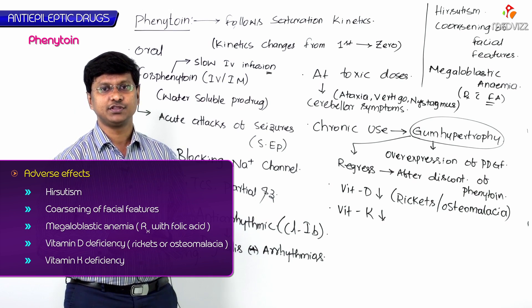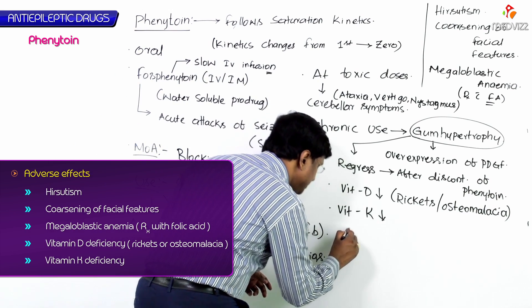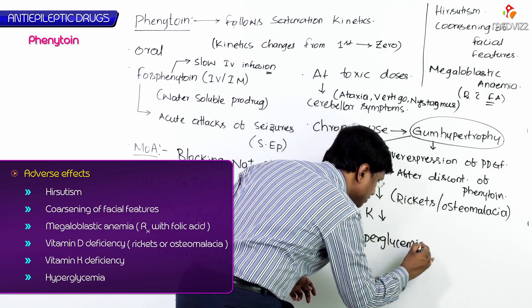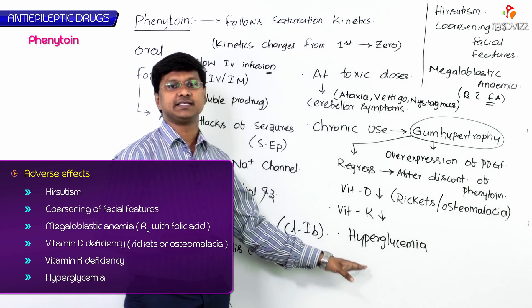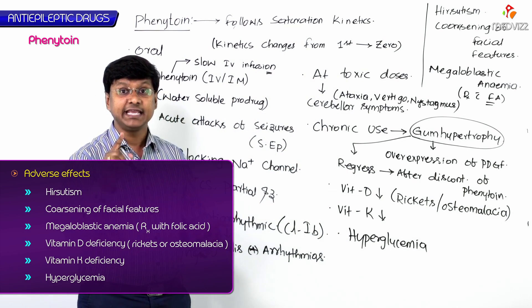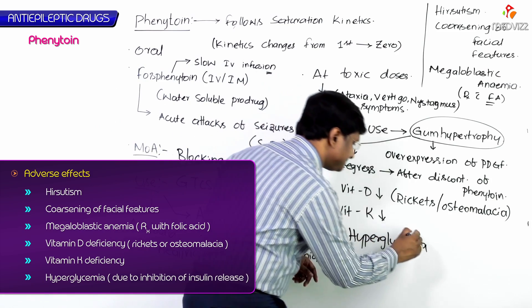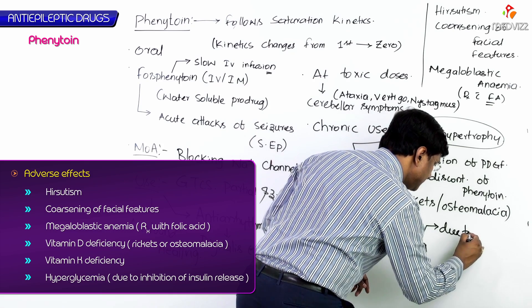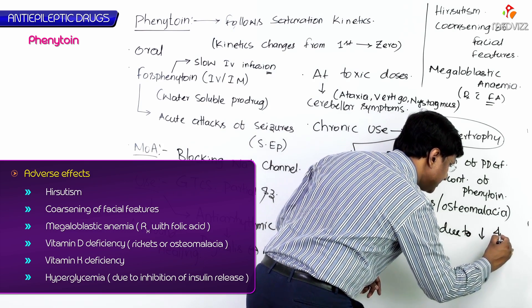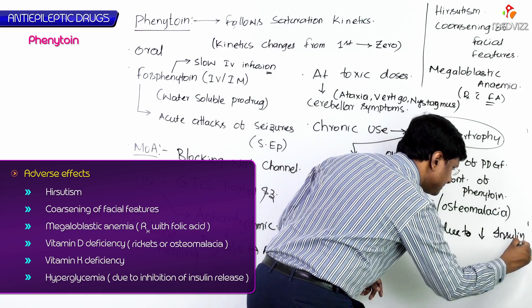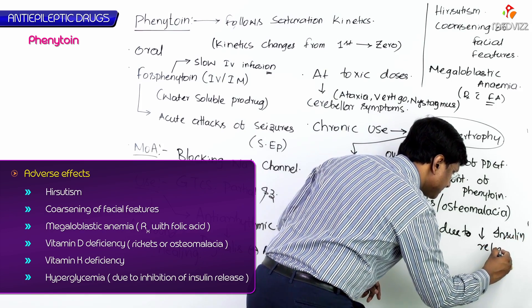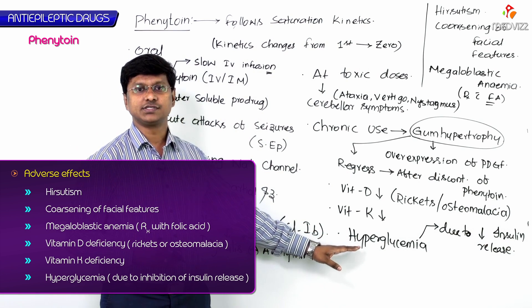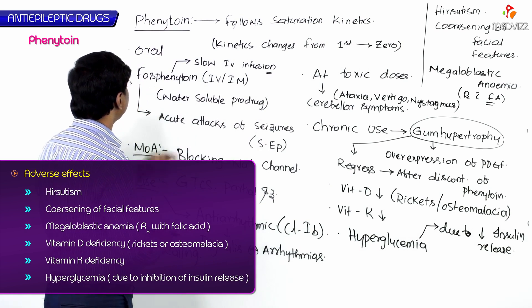Phenytoin also causes vitamin K deficiency, resulting in coagulation abnormalities. Additionally, phenytoin causes hyperglycemia by inhibiting insulin release, leading to decreased insulin levels and increased blood glucose.